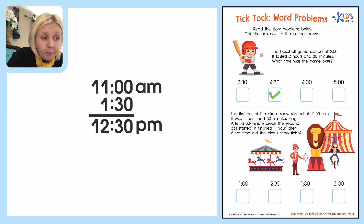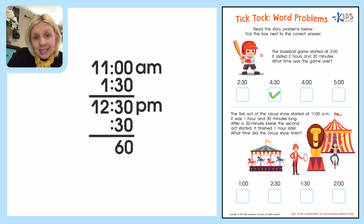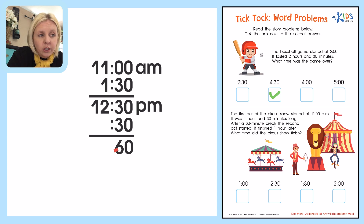After a 30-minute break, the second act started, so we need to add 30 minutes. When we add that up, 30 and 30 is 60. Now, we don't say 12:60 — that's not a time. Any time we've got 60 minutes, it equals 1 hour. So I'm going to put 1 hour over here and add 1 hour on top of 12 o'clock.